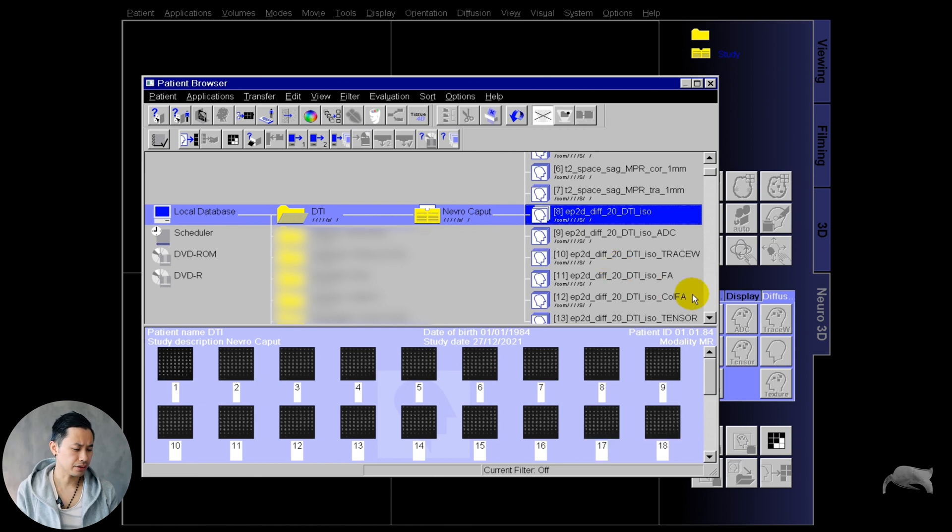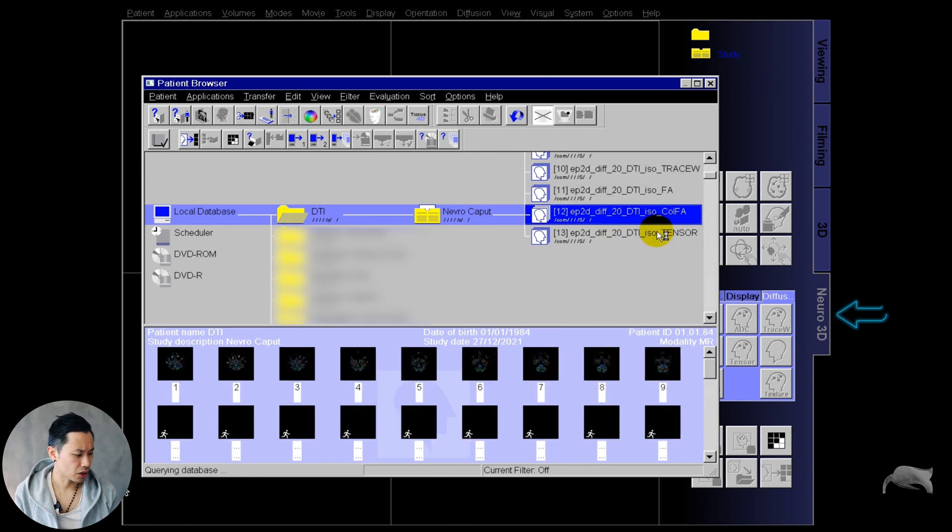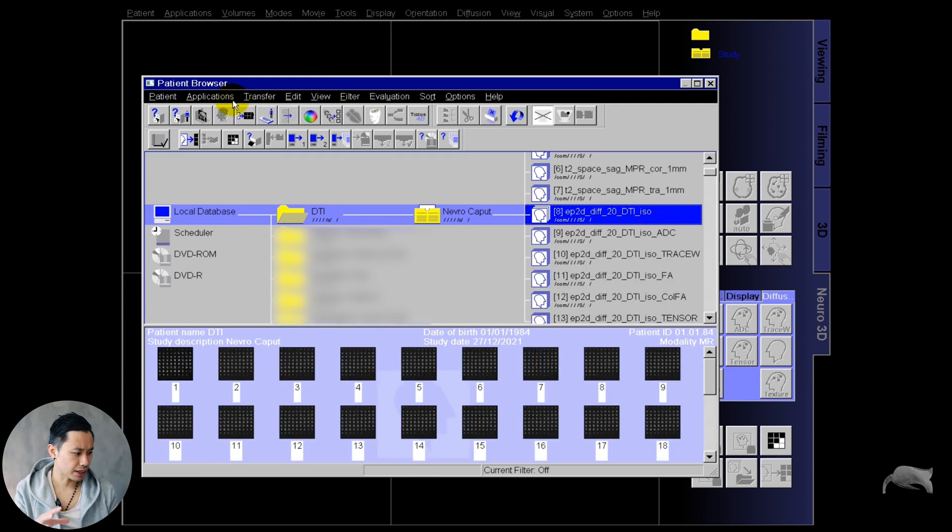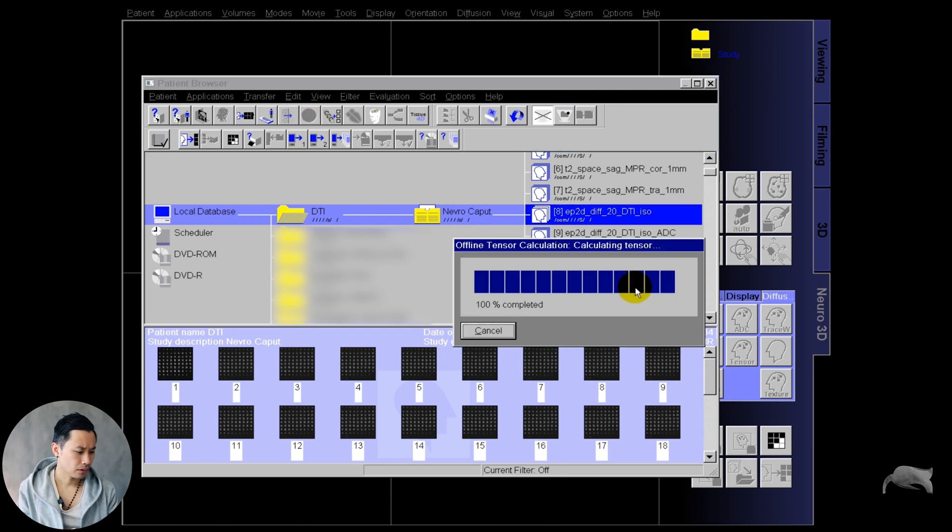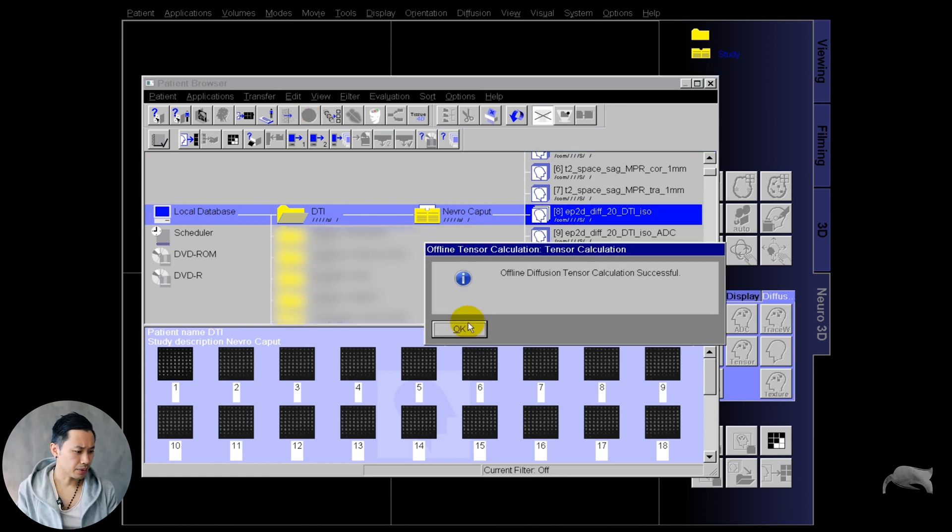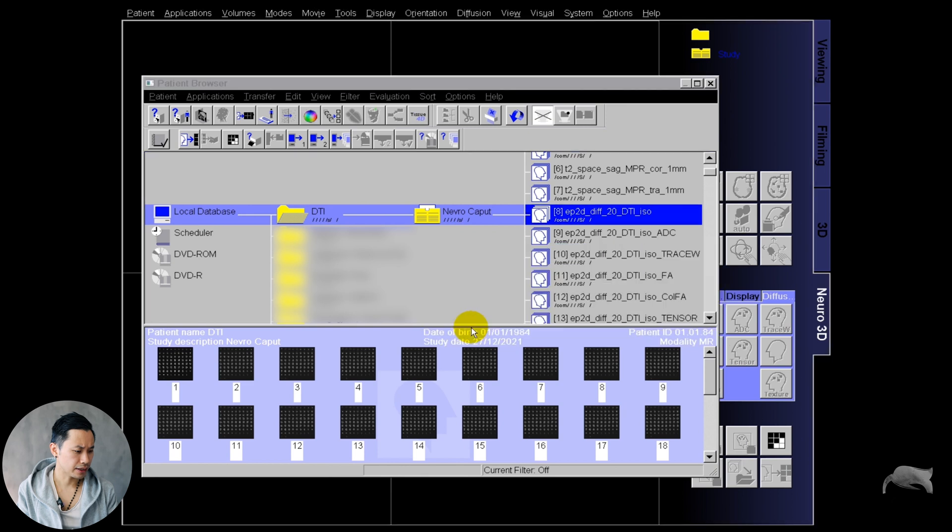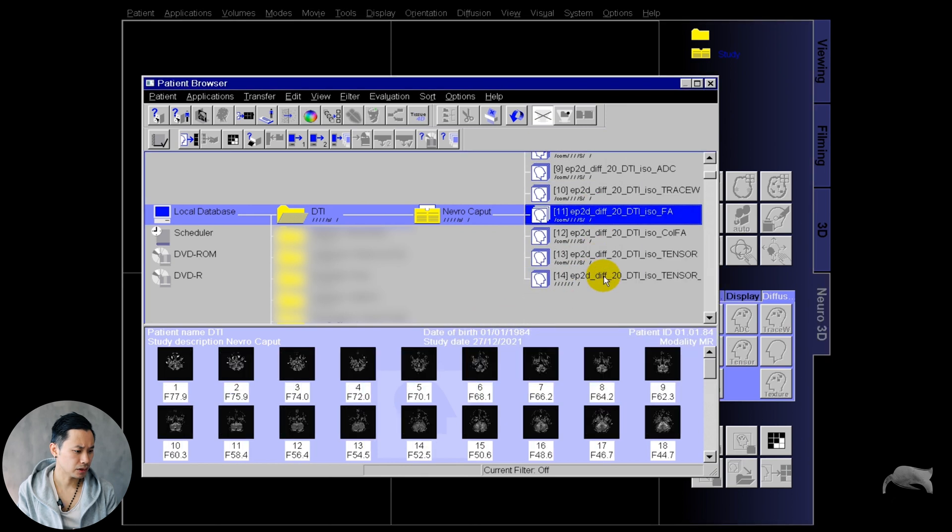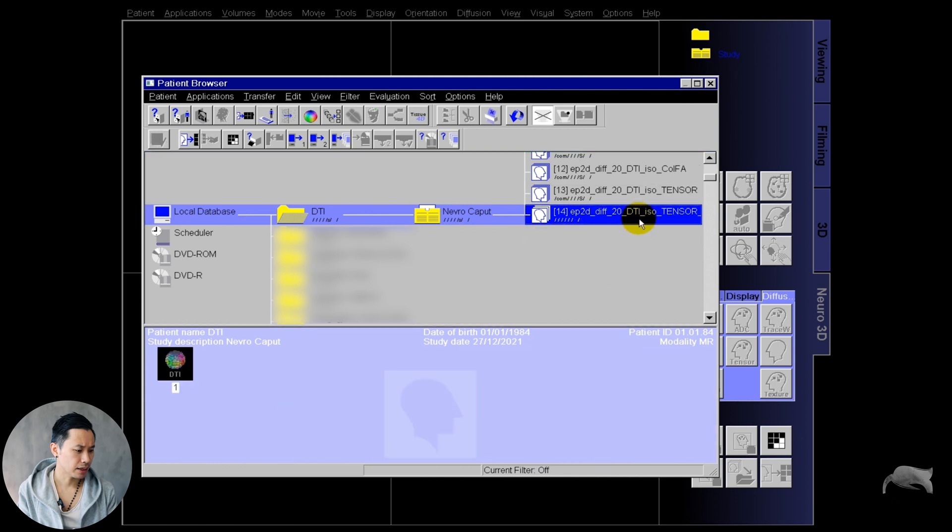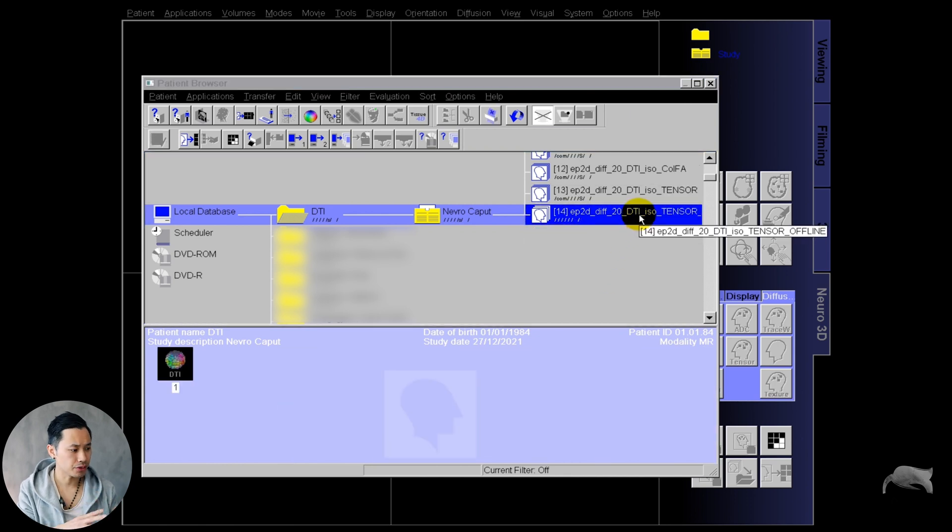Let's go into the browser. You see the DTI comes along with the ADC, the trace, the FA, the color FA, the tensor. We're going to use neurological 3D for post-processing. Some people are using Syngo.via and others are using NeuroLab. There are so many third-party software. First we have to go for the offline tensor calculation, at the bottom you will find the offline tensor calculation. Now you can use the neurological 3D.